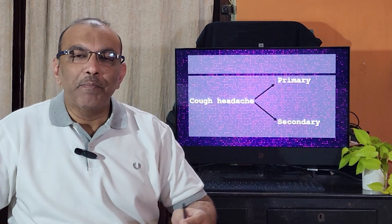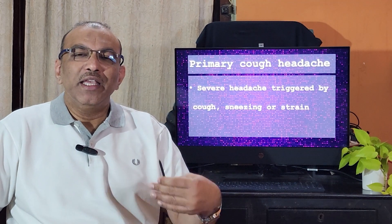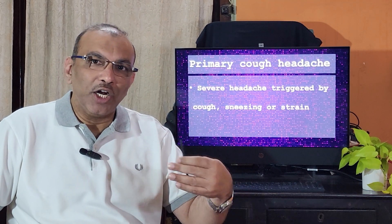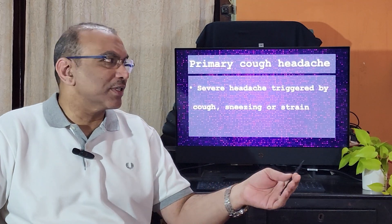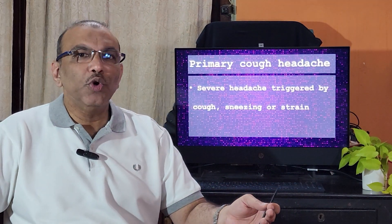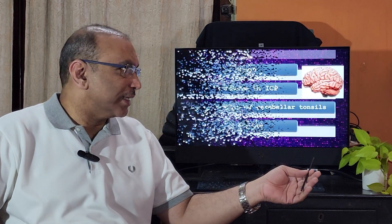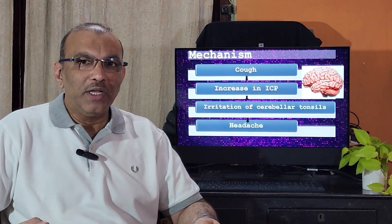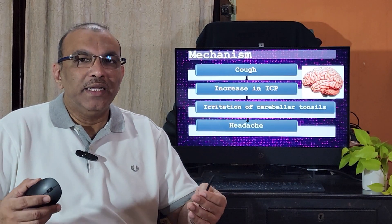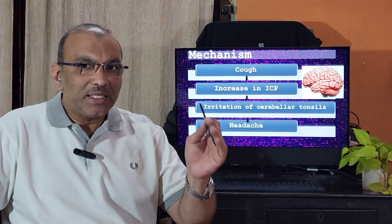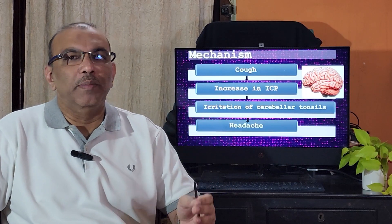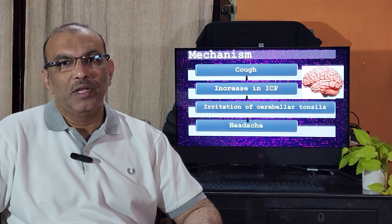Primary cough headache is when there is no particular reason for it - the person suddenly starts coughing, gets a bout of cough, and because of that continuous cough gets a headache, which gets relieved after some time. There is no particular triggering cause. The reason for the headache is that continuous cough increases the intracranial pressure, which triggers certain areas of the brain resulting in a headache.